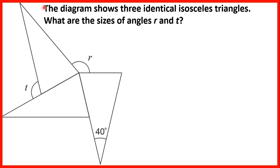The diagram shows three identical isosceles triangles. We need to find the sizes of angles R and T. Because the triangles are identical, the angles in all three are the same size. So if we know that one angle is 40 degrees, that means the corresponding angles in the other two triangles are 40 degrees as well.